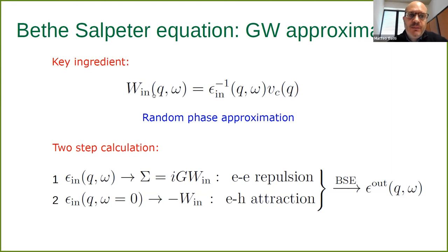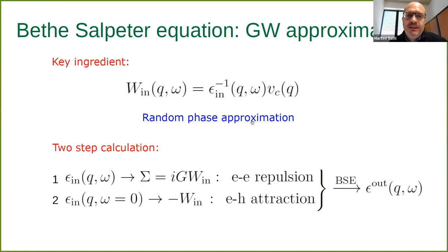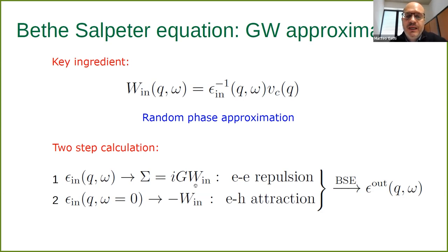In the general approximation, the screening is calculated in the random phase approximation. The Bethe-Salpeter equation calculation is a two-step calculation. In the first step, the screening enters the self-energy through the GW expression — the product of the single-particle Green's function and the screened Coulomb interaction — and we use the self-energy to take into account the electron-electron repulsion. In the second step, the screened Coulomb interaction describes the electron-hole attraction, and the final result of the Bethe-Salpeter equation is, for example, the dielectric function as a function of wave vector and frequency.